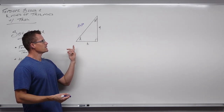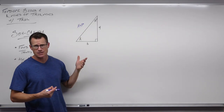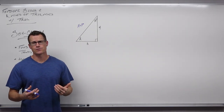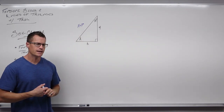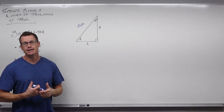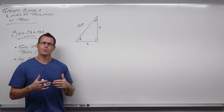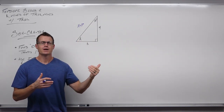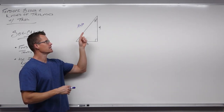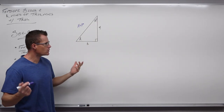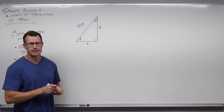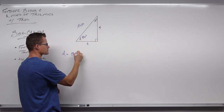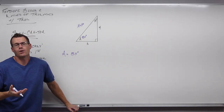Looking at this example, I see sides 4 and B, but Pythagorean theorem isn't useful because I only know one side. However, interior angle sum is very useful. Angles in any triangle add to 180, and since this is a right triangle, 90 degrees is already taken up, leaving only 90 degrees between the two non-right angles. That means they're complementary — they add to 90. So if I know one is 10 degrees, angle A must be 80 degrees.